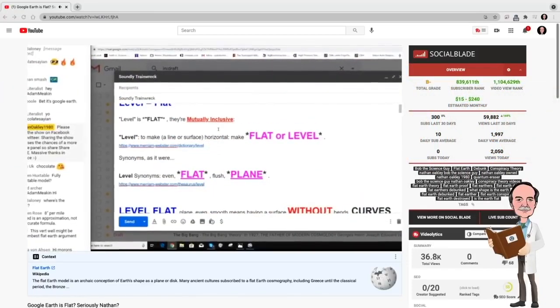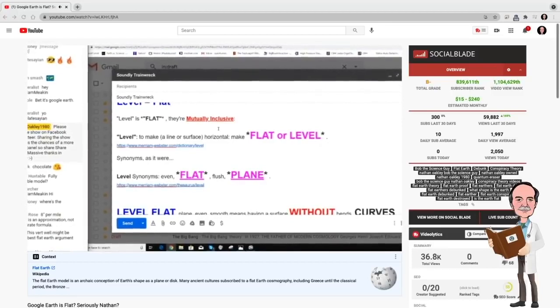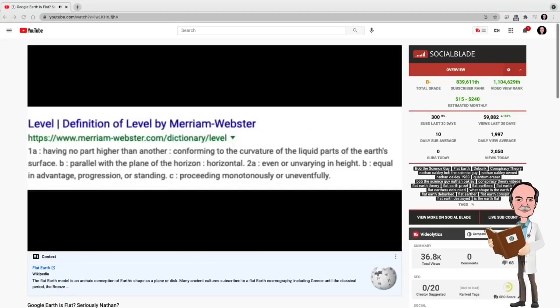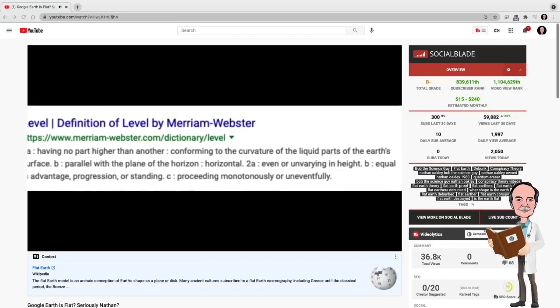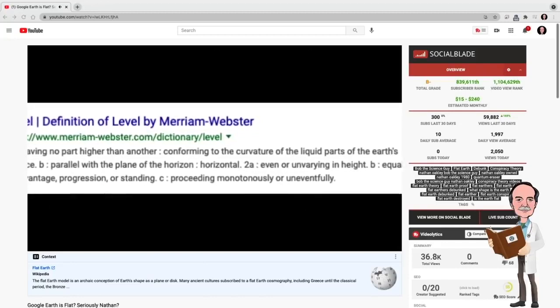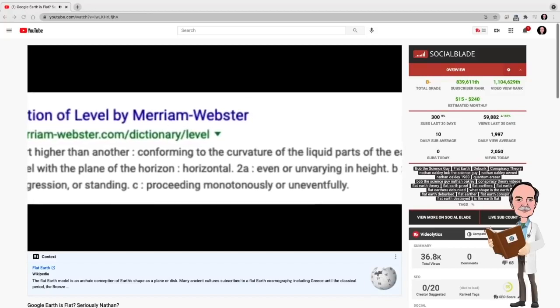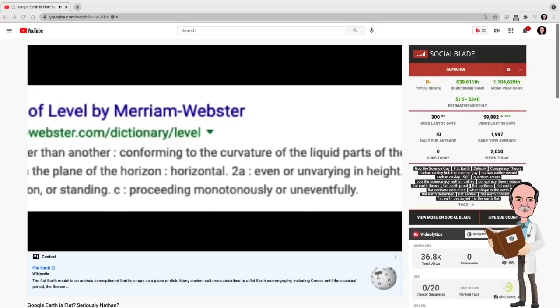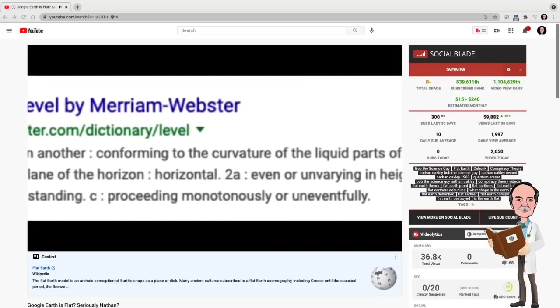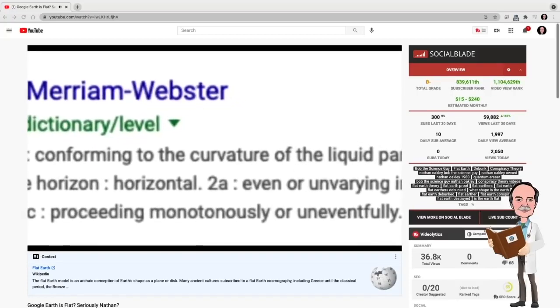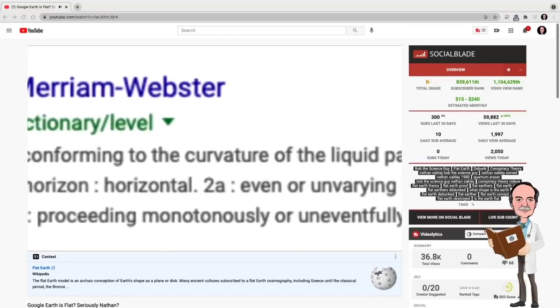From Merriam-Webster, level to make a line or surface horizontal, make flat or level. Now, he continues to go on for a few minutes about the various definitions of level. Now, he looked at the same page that I did. So, you know that he saw this definition of level. Why is he not including this definition? I think the answer will be apparent in a little bit.